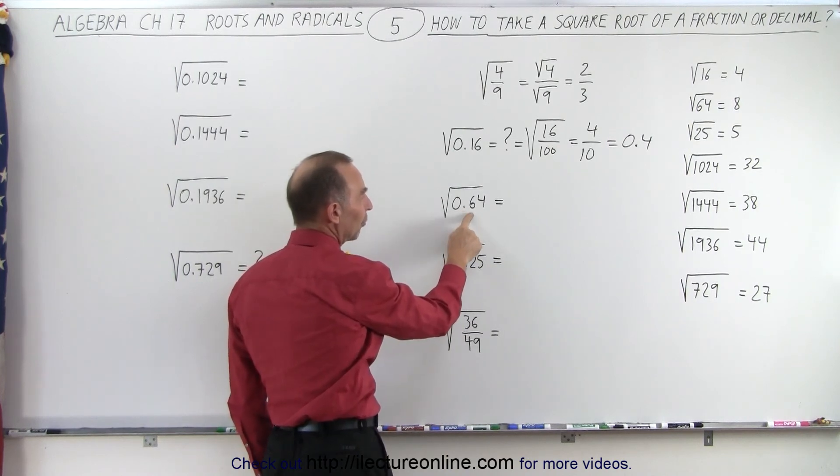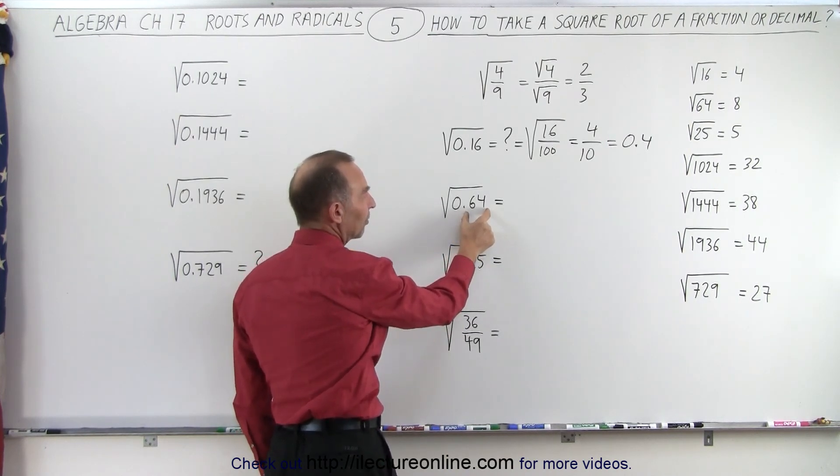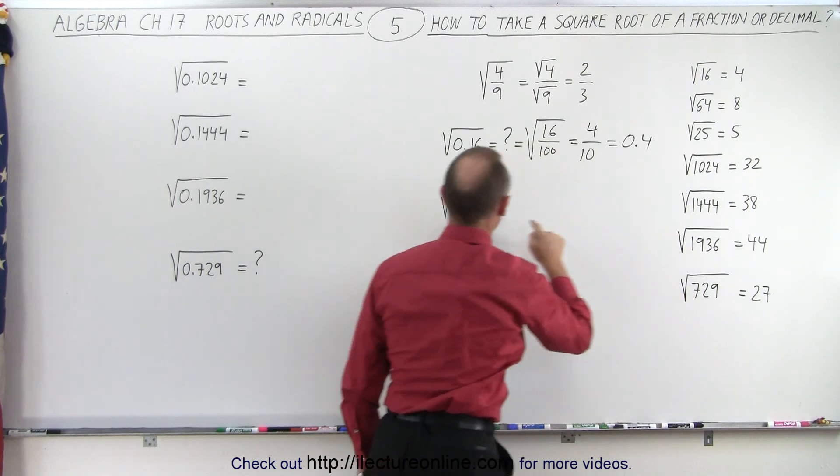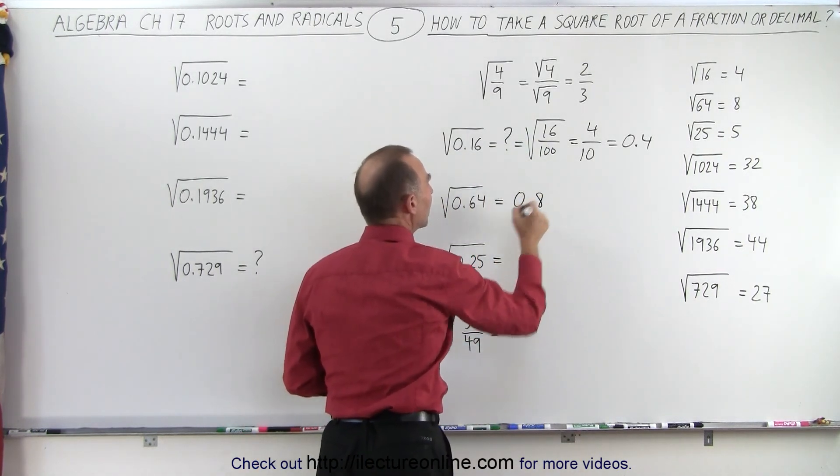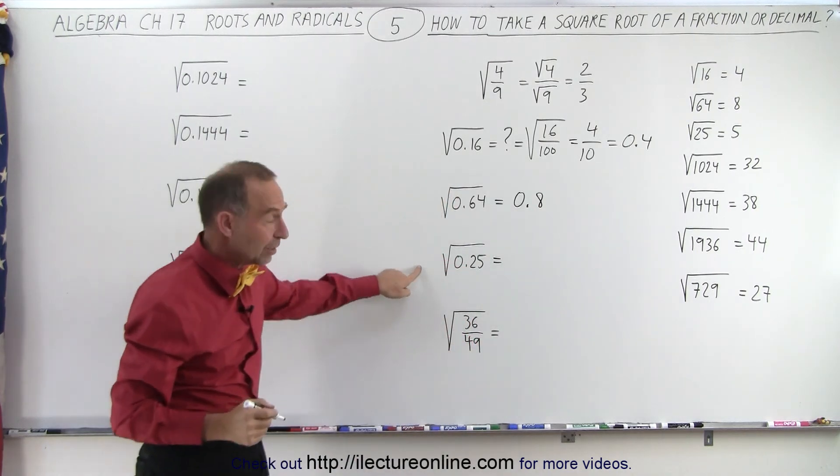For example, the square root of 0.64, well, we know that the square root of 64 is equal to 8, so therefore the square root of 0.64 is equal to 0.8.